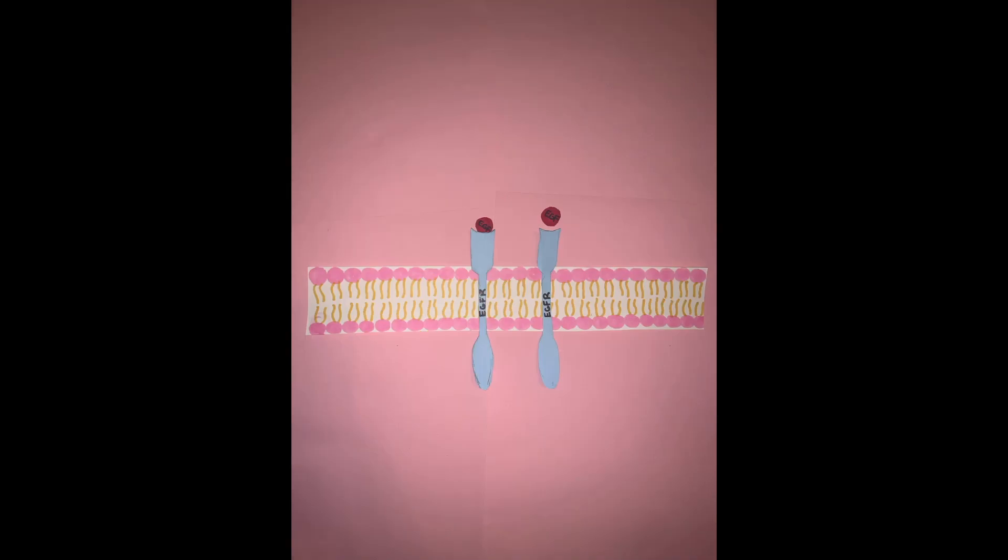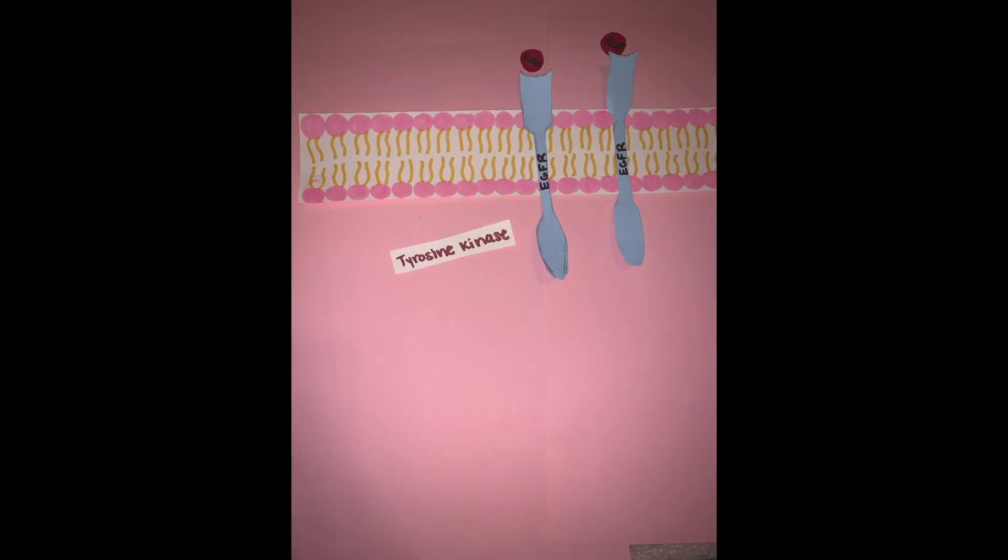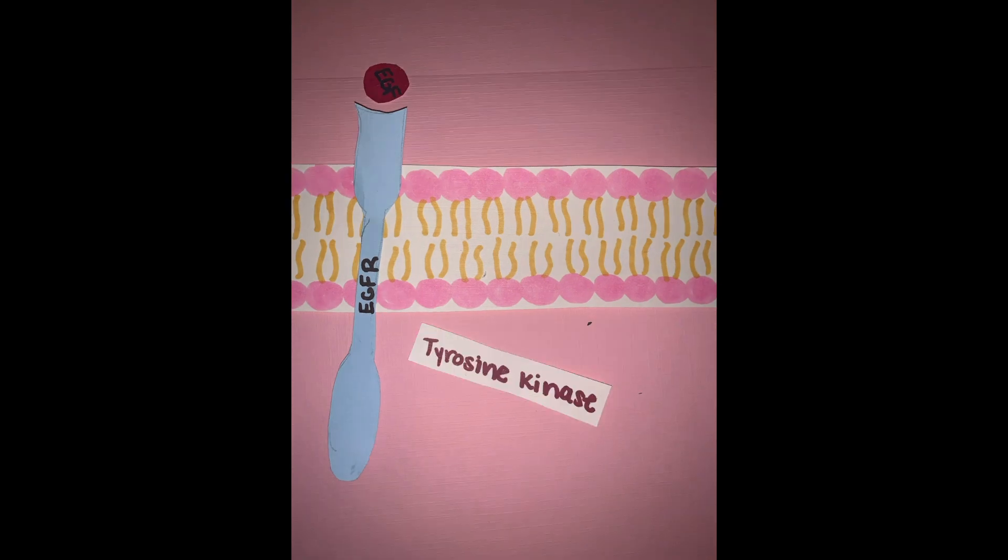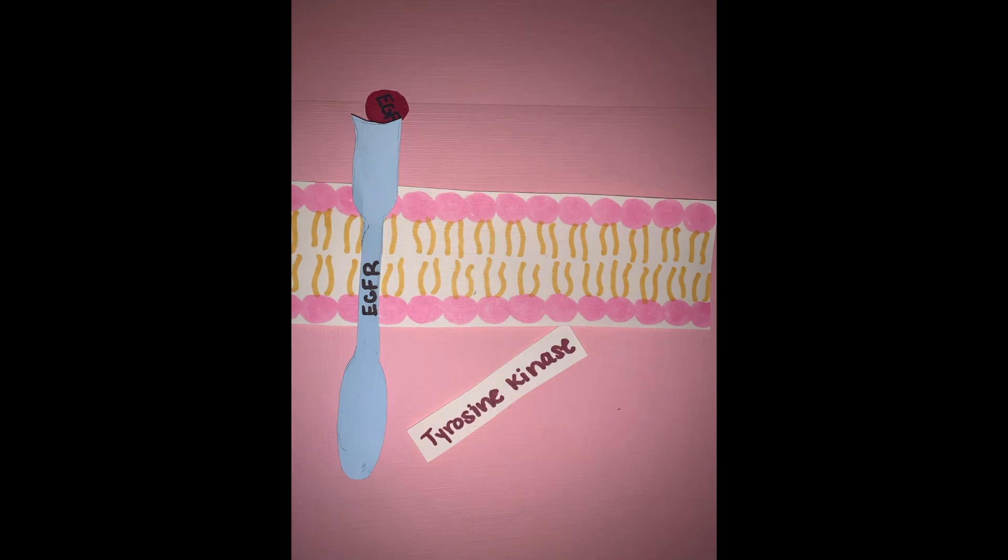Once the EGF is bonded to the EGF receptor, we see the actions of a tyrosine kinase type of receptor. This means that there are kinase proteins that have the ability to phosphorylate other proteins and activate them in this pathway.